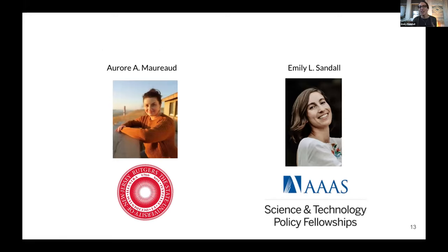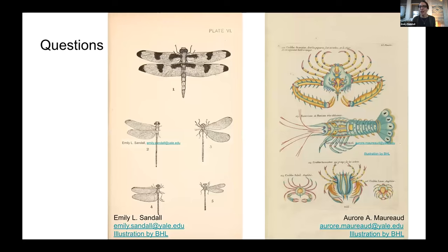Emily and Aurora are no longer at the Center for Biodiversity and Global Change at Yale. Aurora is moving to a postdoc at Rutgers, and Emily has a science and technology policy fellowship through the AAAS where she's a biodiversity advisor for the USDA. They're happy to continue this discussion and look forward to more work coming out soon.